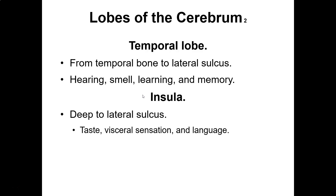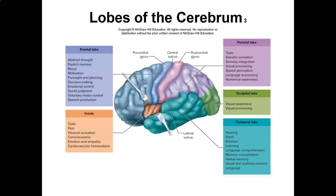Will this be on the quiz? Probably. The frontal lobe handles abstract thought, explicit memory, mood, motivation, foresight, planning, decision-making, emotional control, social judgment, voluntary motor control, and speech production — so damage causes a lot of problems. The insula handles taste, pain, visceral sensation, and consciousness. The parietal lobe handles taste, somatic sensation, sensory integration, and spatial perception. The occipital lobe handles visual awareness. The temporal lobe handles hearing, smell, emotion, learning, language comprehension, verbal memory, and language.